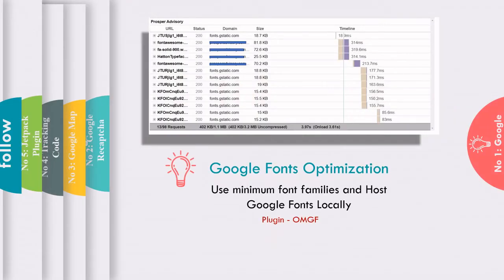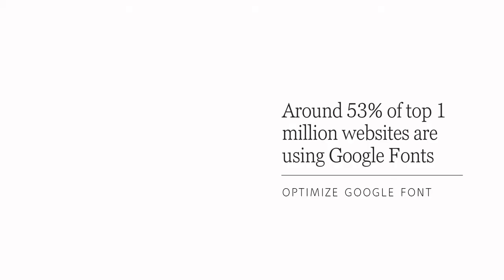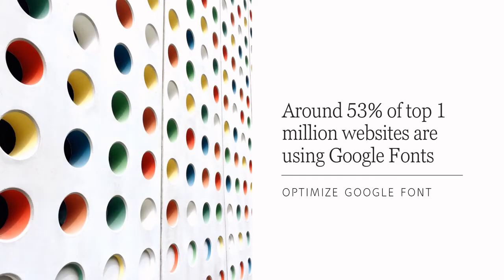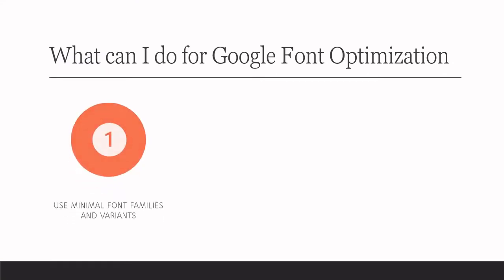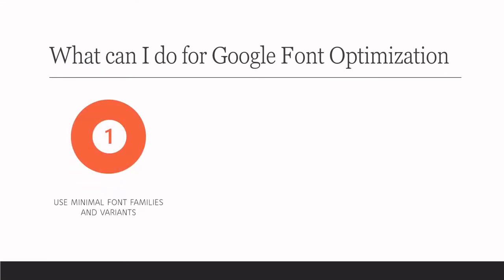The number one thing on my list is Google Fonts. Around 53% of the top one million websites are using Google Fonts. But by properly optimizing Google Fonts, you can have a huge impact on website performance. The number one thing is to use minimum font families and variants, and download only the set of fonts you are using on your website. I would recommend choosing only two fonts — one for headings and another for content throughout the website.